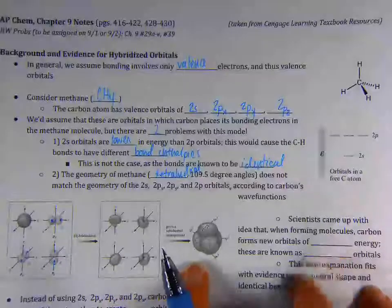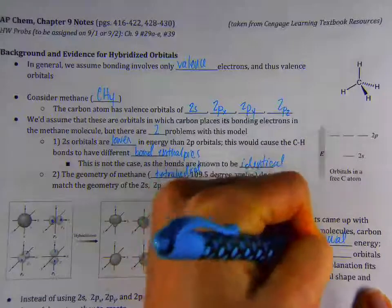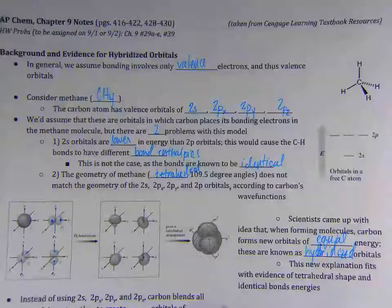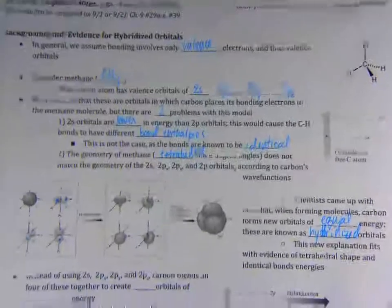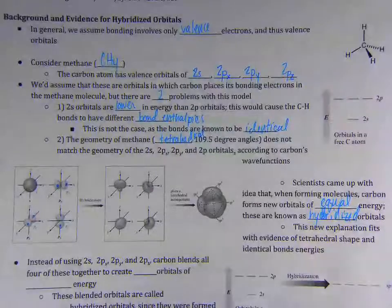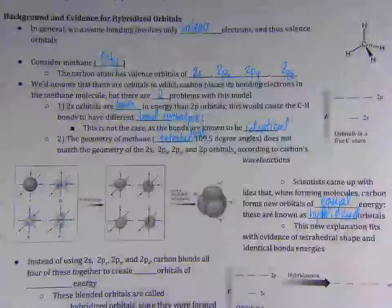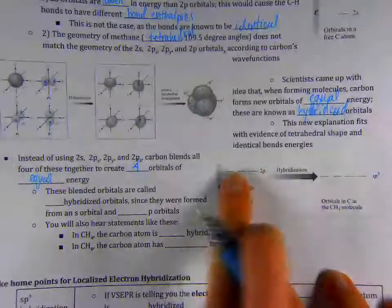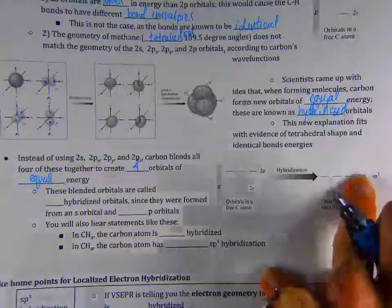So, scientists came up with the idea that when forming molecules, carbon and all atoms actually form new orbitals of equal energy. These are called hybridized orbitals. This new explanation explains away the tetrahedral shape, the energies, while not really changing our understanding of bonding that much. So, when carbon forms methane, or any molecules form, not just carbon, that's just our example here, instead of using the 2s, and then the 2px, 2py, and 2pz orbitals, carbon blends all four of them together to create four orbitals that have equal energy. And that's what this diagram over here is showing. Rather than the orbital diagram with the 2s orbital and then the three 2p orbitals slightly higher in energy, carbon hybridizes all four of the orbitals to be the same energy, some sort of intermediate value.